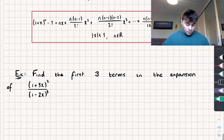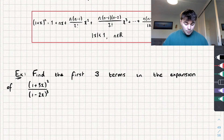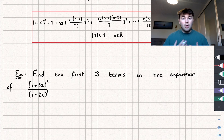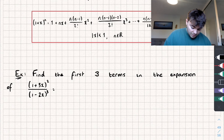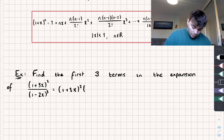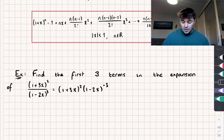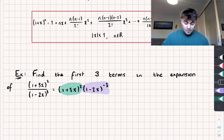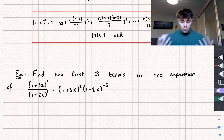We'll take a look at the first question where we need to find the first three terms in the expansion of (1+3x)² multiplied by or divided by (1-2x)³. The first step is to rewrite it: (1+3x)² multiplied by (1-2x) to the power of negative three. The reason I've done this is because now I can calculate the expansion of each part and then multiply them together, rather than doing any dividing.